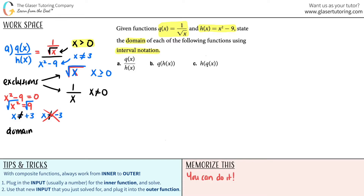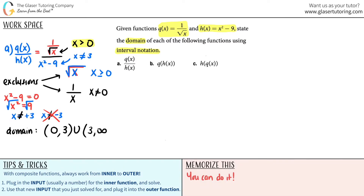Now I'll put them together and make the domain. Since zero is less than three, I start at zero. It can't be equal to zero so I use parentheses — from zero all the way up until three. Since it cannot be equal to three, I close the parentheses there. Then I start at three again, exclude it, and go all the way up until infinity. That would be your domain for part A: (0, 3) ∪ (3, ∞).